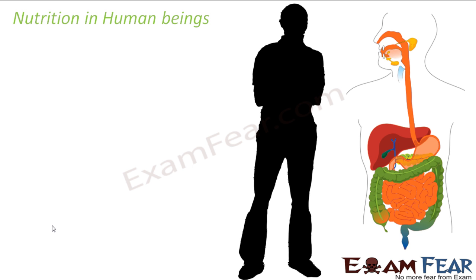Human beings, being a very complex multicellular organism, let us see how the steps of holozoic nutrition are carried out. Holozoic nutrition means they take in fruits, vegetables, meat, fish, egg, milk, and pulses. So there are a variety of types of food material taken in by human beings.